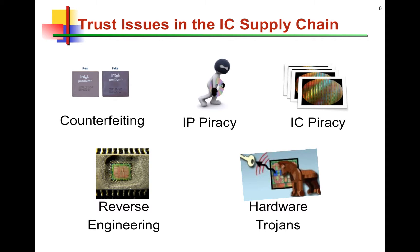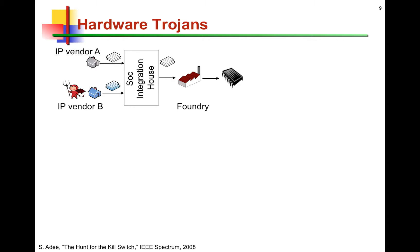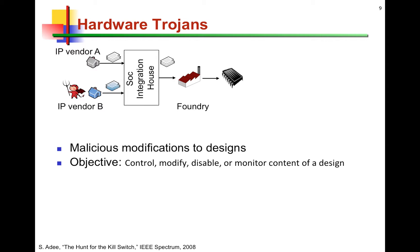Next, I'd like to talk about these trust issues one at a time, starting with Trojans. We all know the software counterpart of Trojans, but hardware Trojans refer to malicious modifications embedded in designs at the hardware level. The objective of a Trojan designer could be to control, modify, disable, or monitor an electronic chip — for example, disabling a chip remotely while it's operational, or leaking sensitive information as the chip communicates in the field.